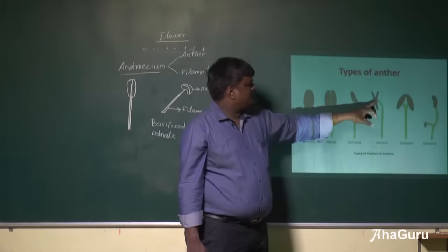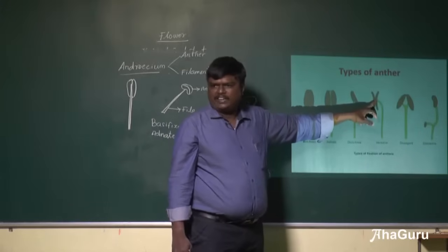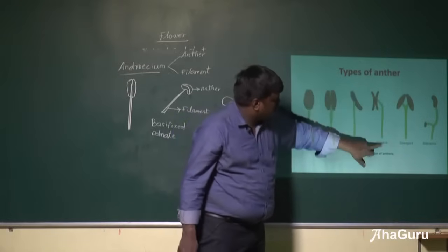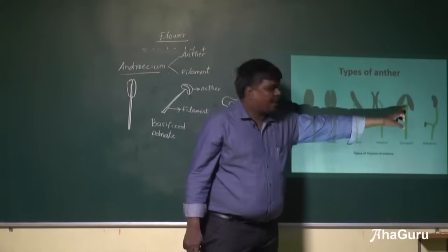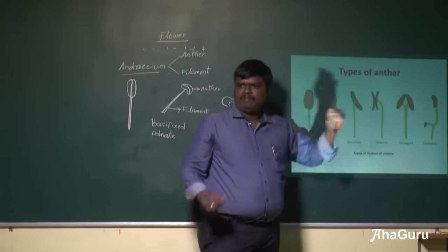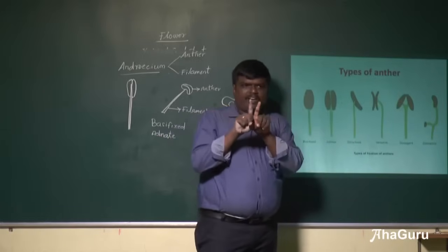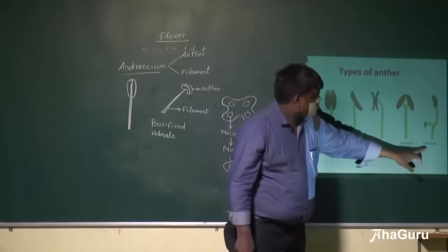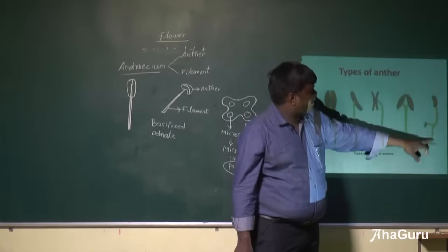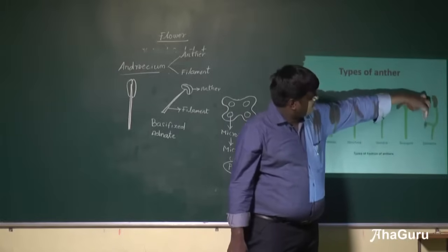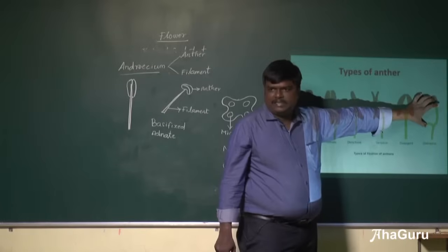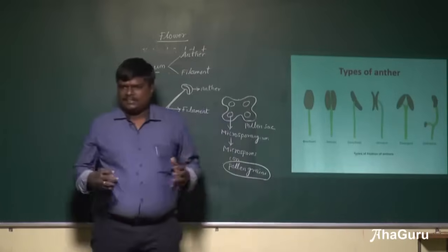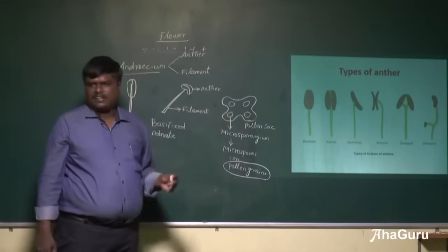Next is versatile, where the anther is fixed to the center and divides into two. Then there is divergent type, where the anthers are diverged and the filament is fixed to each diverged part. And then we have the dithecous type, where there are two separate anthers. These are the different types of anthers.